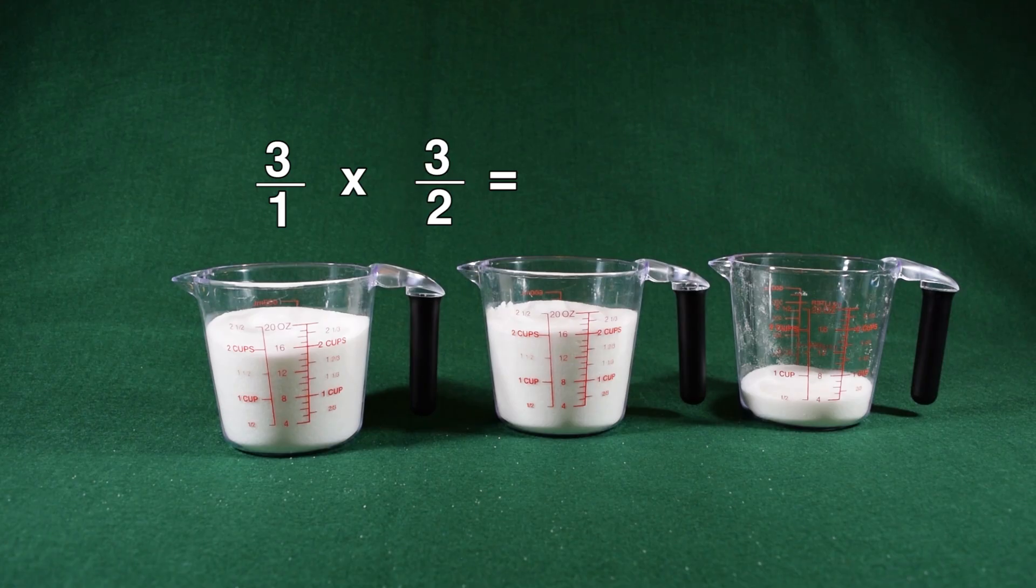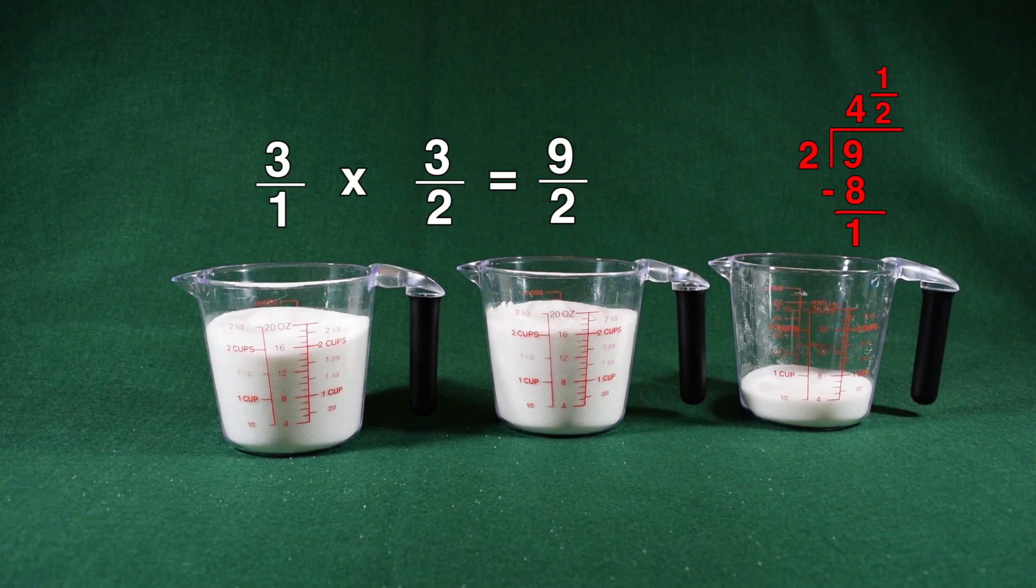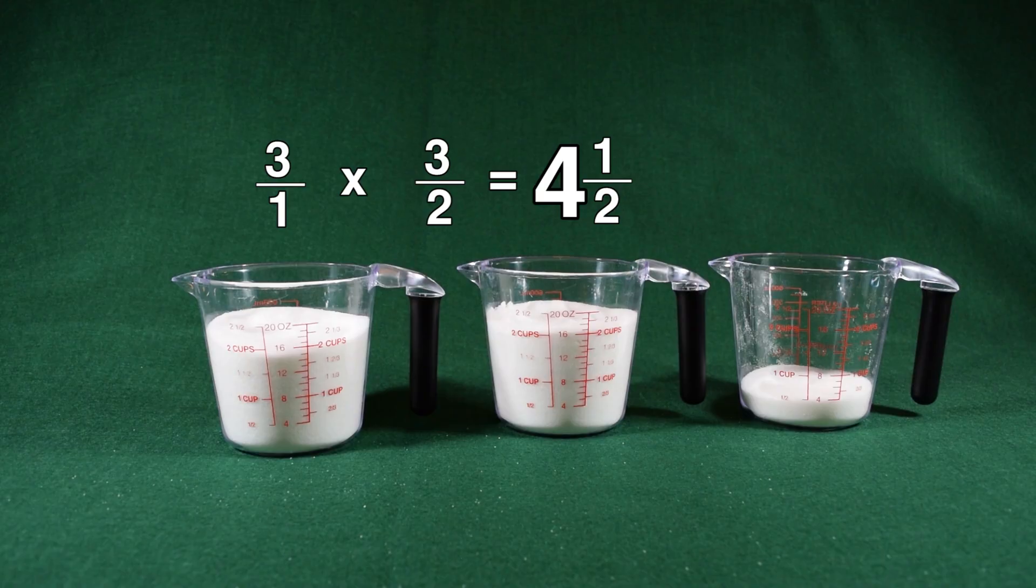I can now multiply three over one times three over two. Three times three gives me nine. One times two gives me two, so nine halves. I can then change nine halves to a mixed number by dividing nine by two. Two goes into nine four times with one left over, giving me four and a half. We can see this is the same amount we got from measuring out the sugar.